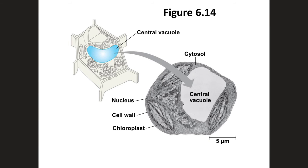Vacuoles are large vesicles derived from the endoplasmic reticulum and the Golgi apparatus. There are three different types. The central vacuole is seen in plant cells — it fills a large part of the plant cell, maintains water balance, and stores pigments, ions, sugars, and waste products. Vacuoles in animal cells are used for transporting food, water, and waste products. Food vacuoles can be formed by phagocytosis.